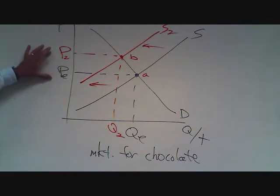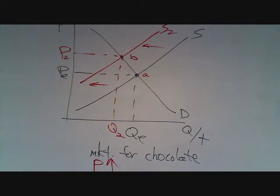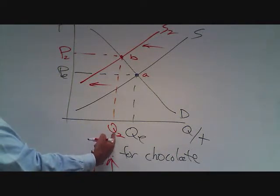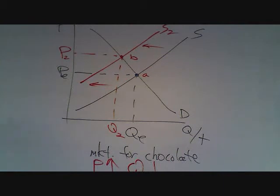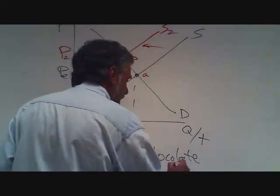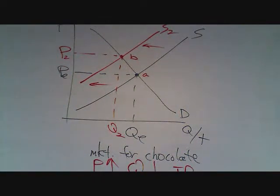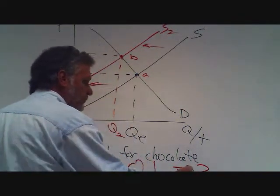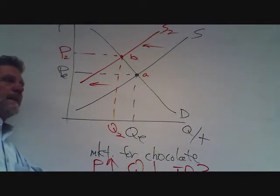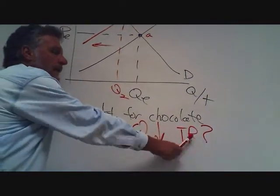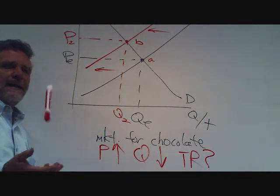Is that price higher or lower than originally? P2 is higher than PE, therefore we conclude the price is going to go up. What happens to the quantity of chocolate sold? Q2 compared to QE — Q2 is lower, so the quantity of chocolate sold will be less. And the revenues of the chocolate producers — that's indeterminate, question mark. Because revenue is price times quantity: if the price is up that makes revenues higher, but if the quantity is down that makes revenues lower. Unless we know the size of these changes, we cannot predict what will happen to revenues. Revenues might be higher, lower, or the same as before.